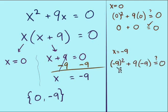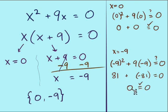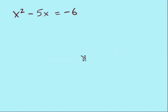For x equals negative 9, we put negative 9 in place of each x. We have negative 9 to the second power — a negative times a negative is positive, giving us positive 81. The middle term is positive 9 times negative 9, which is negative 81. So 81 plus negative 81 does equal 0. Both solutions check out.